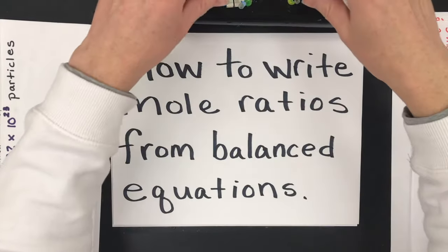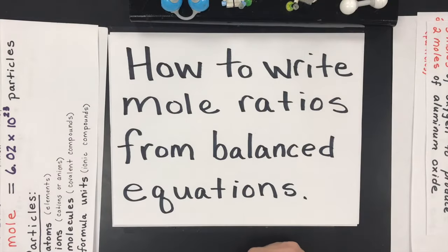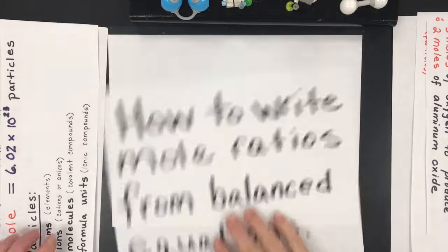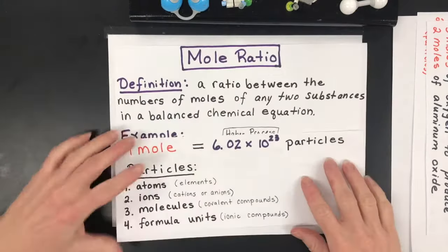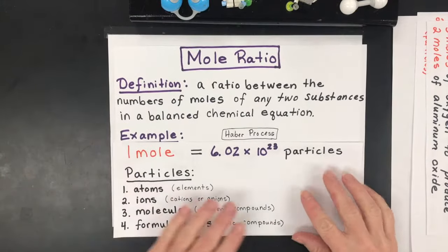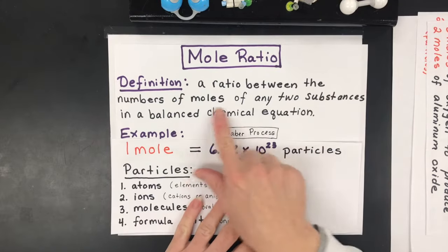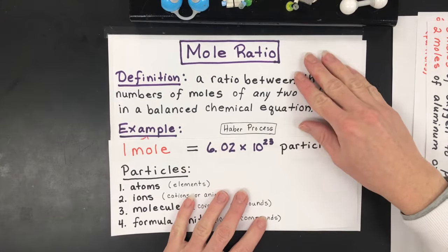Hello fellow chemists. Today we're going to go over how to write mole ratios from balanced equations. The first thing to start with is a definition of what a mole ratio is. It's the ratio between the numbers of moles of any two substances in the balanced equation.